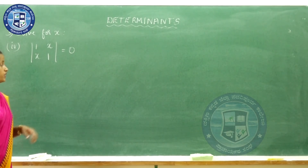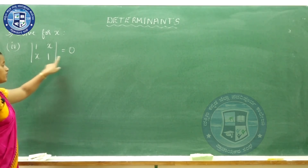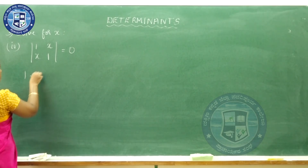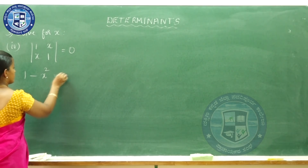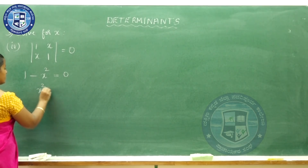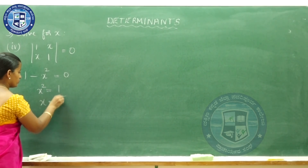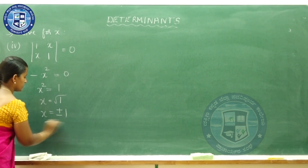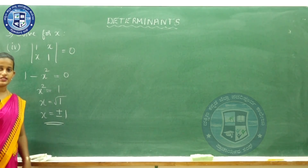Fourth one: determinant of [1, x; x, 1] equals 0. So 1 into 1 is 1 minus x into x is x², equal to 0. So x² equals 1, therefore x equals root 1, that is plus or minus 1.